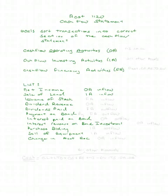How about issuance of stock? You issued stock — that is a financing activity and it's also an inflow. How about dividend revenue — revenue you received on an investment? Where does revenue go? Part of net income, so operating activities as an inflow.